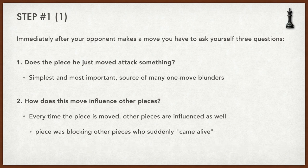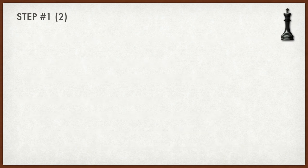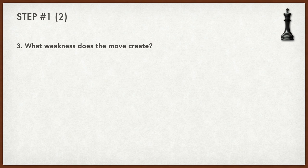Another typical example is when a piece is blocking a pawn. If you can imagine the knight on f6 is blocking the f-pawn, and your opponent wants to play f5 or f4, then after the knight moves, the pawn can now move forward — whereas before it couldn't. So the idea is to ask yourself how does this move influence other pieces? The third question you need to ask yourself is: what weakness does the move create?